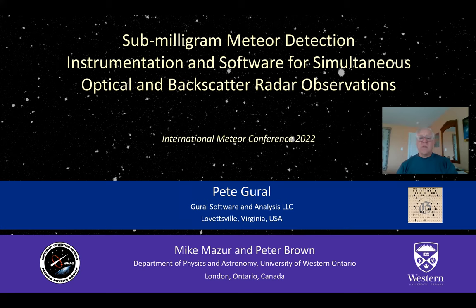This system is designed for simultaneously collecting under-dense radar meteors and their optical counterpart in a real-time collection system. This covers a mass range similar to most optical meteor surveys, which allows us to explore and characterize the sporadic background in greater detail.